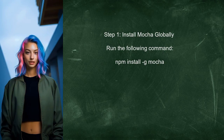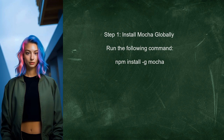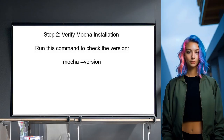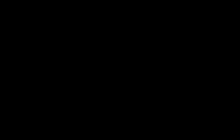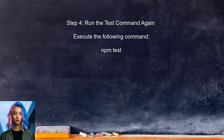To resolve the issue with Nodemon not recognizing Mocha, first ensure that Mocha is installed globally on your system. This can be done by running a specific command in the terminal. Next, verify that Mocha has been installed correctly by checking its version in the terminal. If Mocha is installed correctly, modify the test script in your package.json file — instead of using single quotes, use double quotes for the command. Finally, run the test command again to see if the issue is resolved. This will allow Nodemon to execute Mocha without any errors.